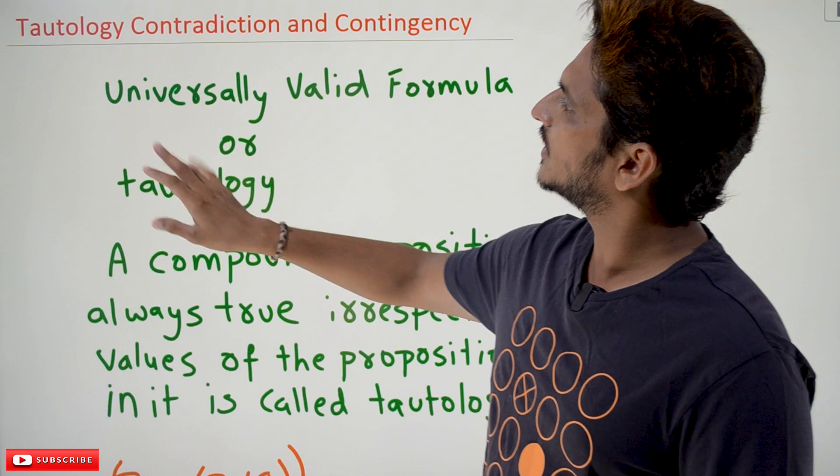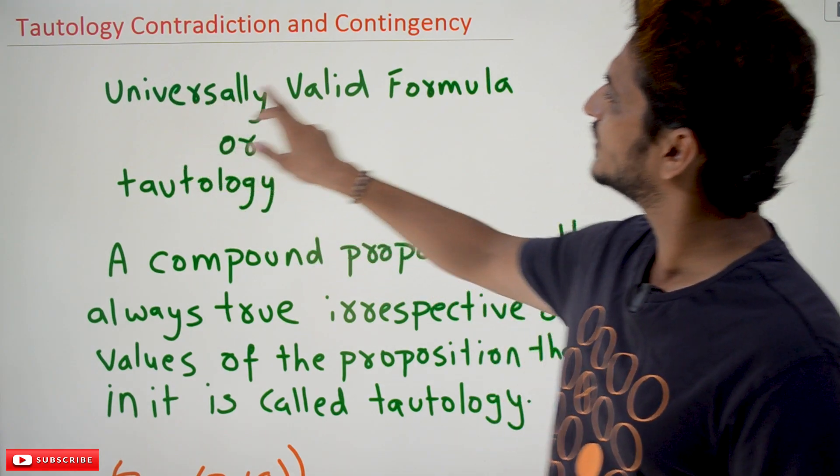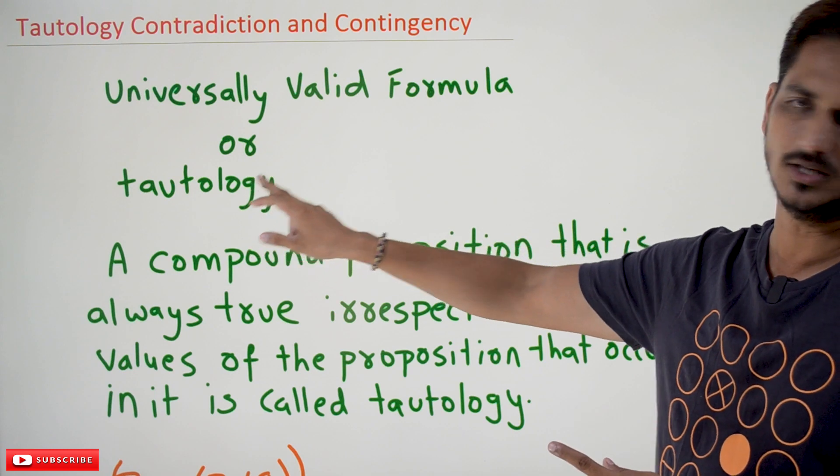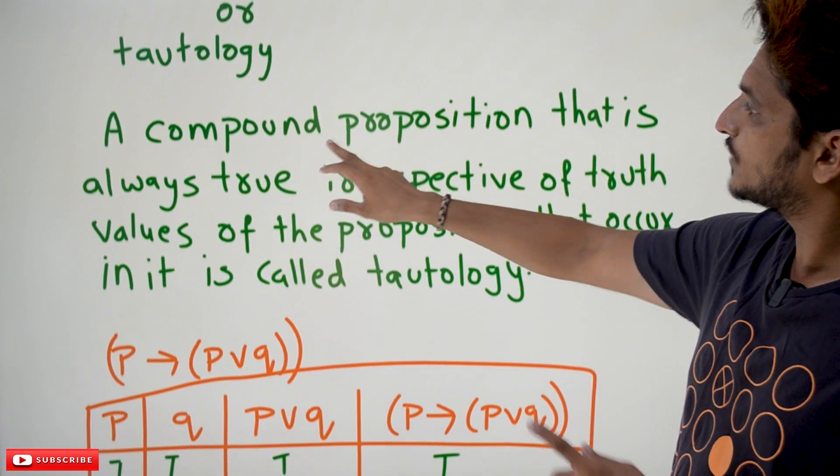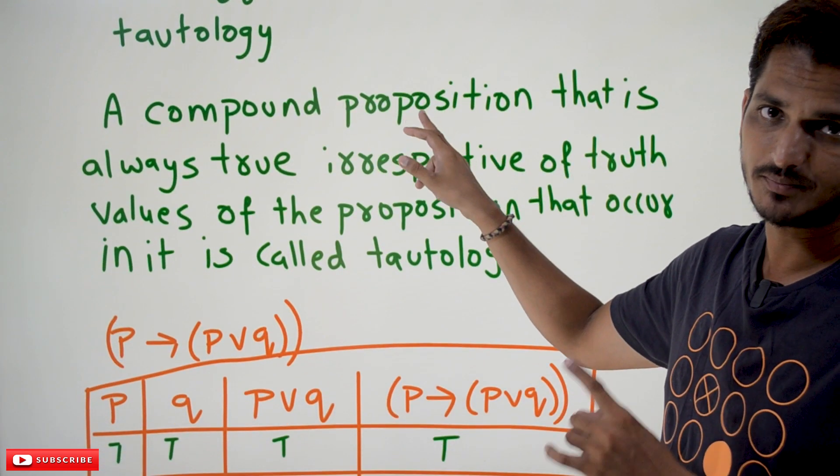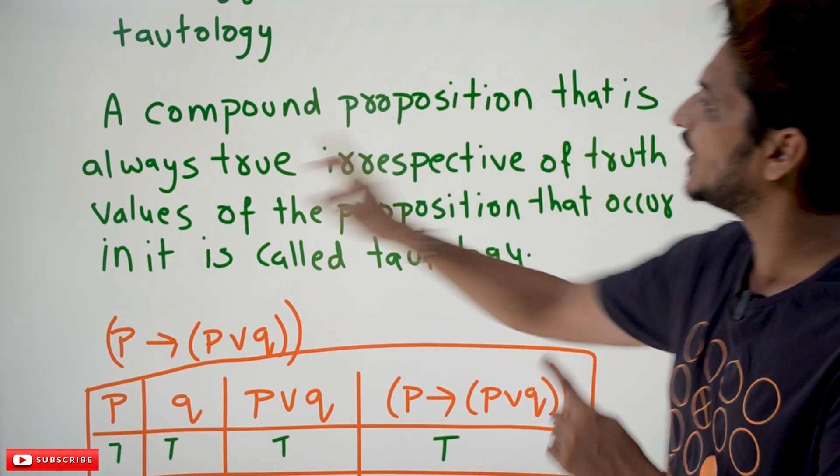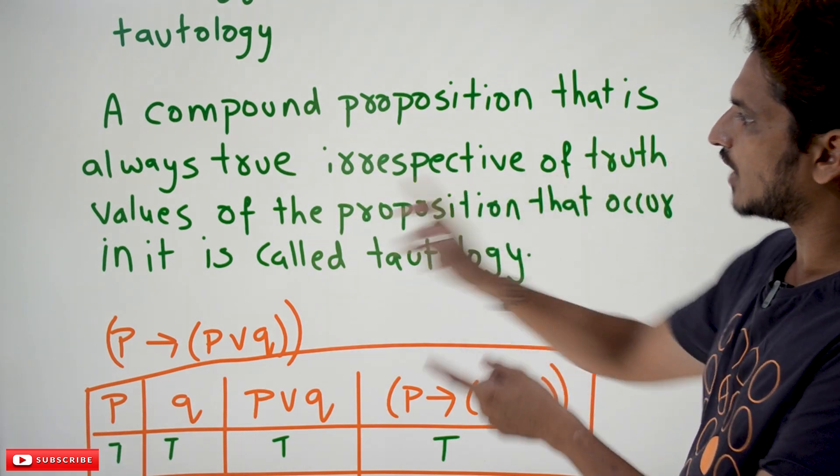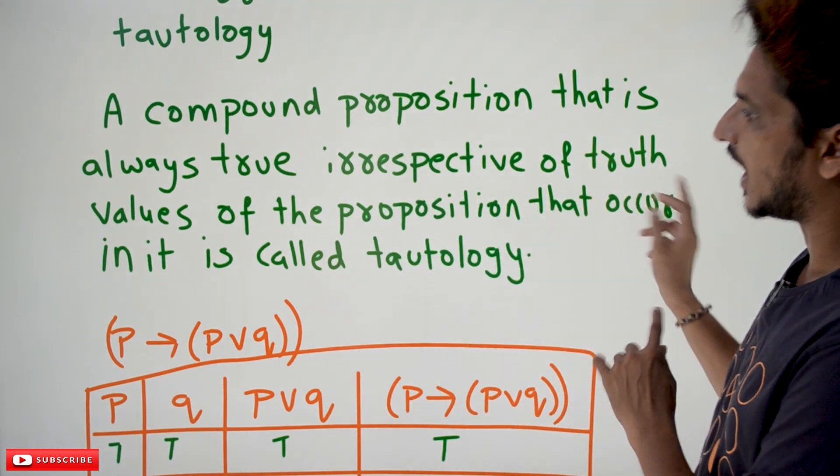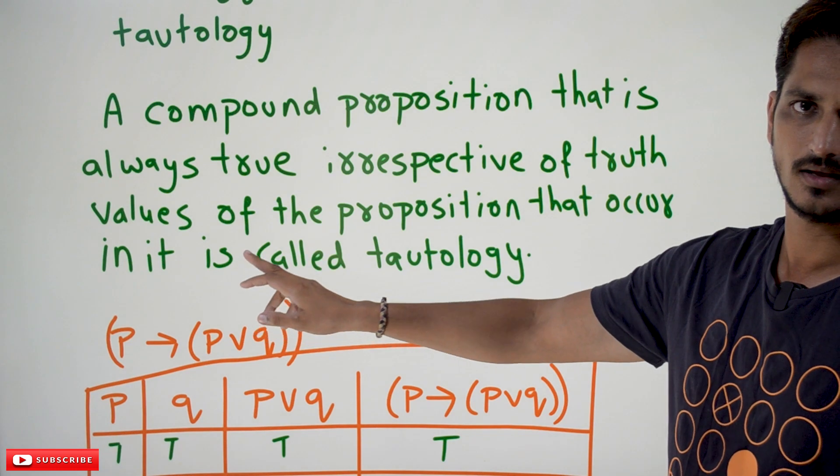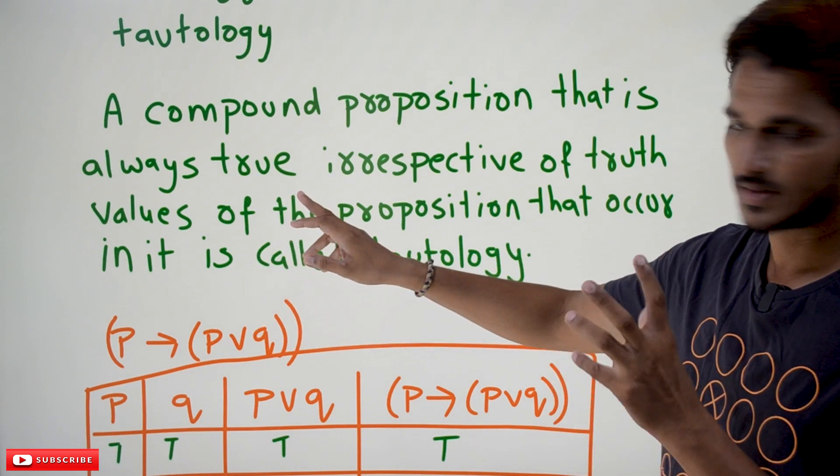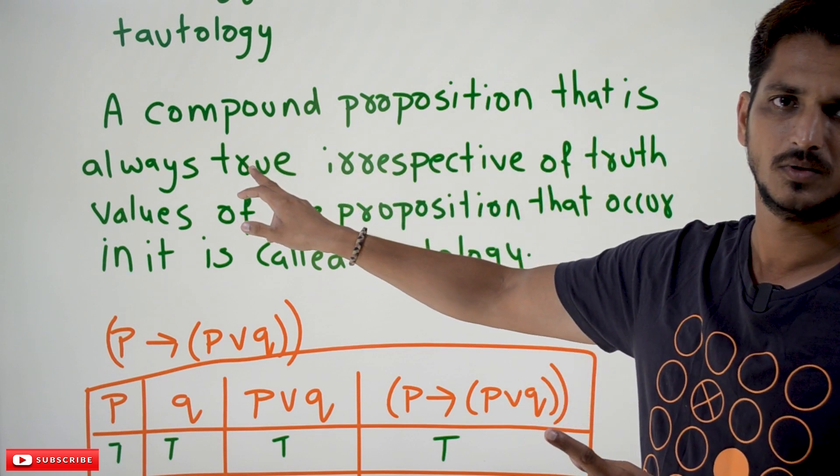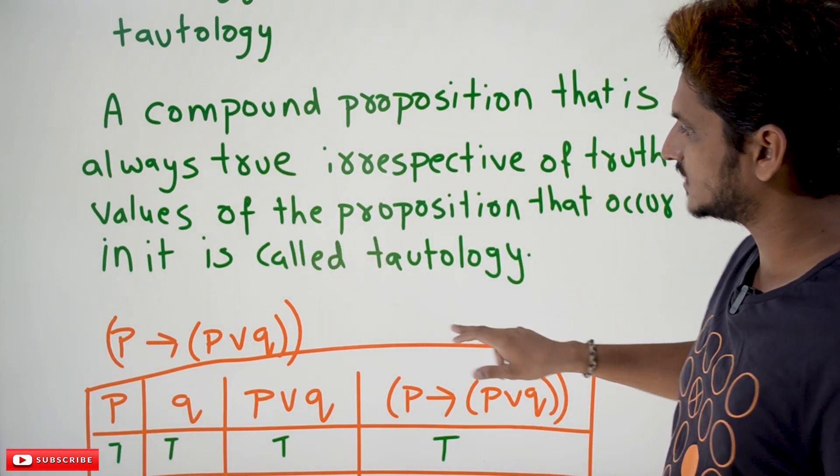So let us try to understand tautology first. Universally valid formula, or simply we call it tautology. A compound proposition - proposition means statement - a compound statement that is always true irrespective of the truth values of the propositions that occur in it. You need to remember this: a compound proposition that is always true.